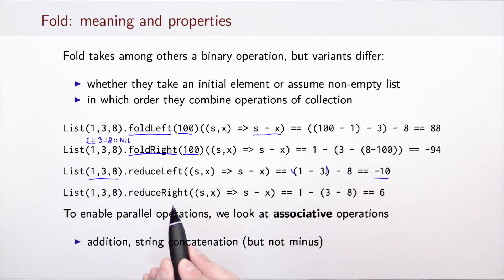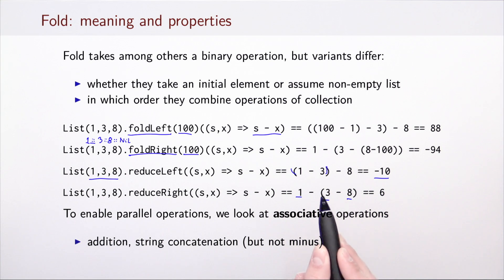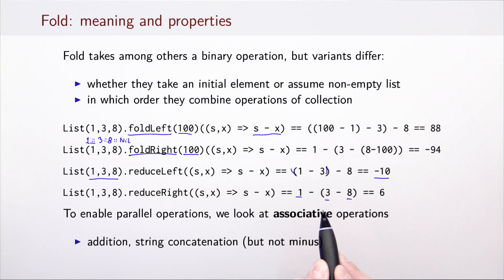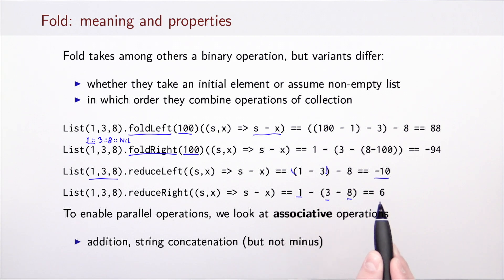In contrast, reduce right, while also preserving the order of elements, combines them by inserting parentheses towards the right, so elements on the right side are combined first. In this example, 3 minus 8 is minus 5, and then 1 minus (minus 5) is plus 6. So for reduce as well, the order matters when we have an operation such as minus.